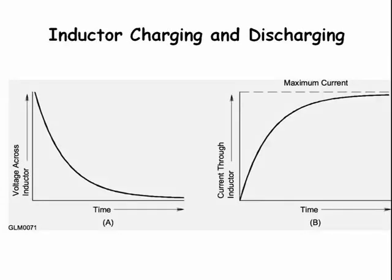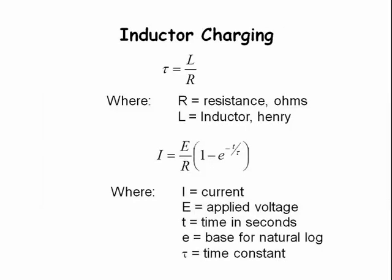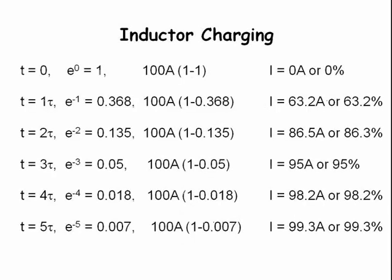Here is what the charge and discharge plots look like for an inductor. Notice that they look very much like that of a capacitor just flipped — that is, the voltage initially increasing in the capacitor, the voltage initially decreasing in the inductor. Here is the equation for the current in an inductor when it is charging. Inductor current and capacitor voltage look very similar. If we start out with 100 amps, then at time T0, the current through the inductor is 0 amps. At one time constant, the current through the inductor is 63.2 amps. At two time constants, the current is 86.5 amps, etc. Again, this does not plot as a straight line, and note that mathematically, the current through the inductor never quite reaches the full 100 amps.